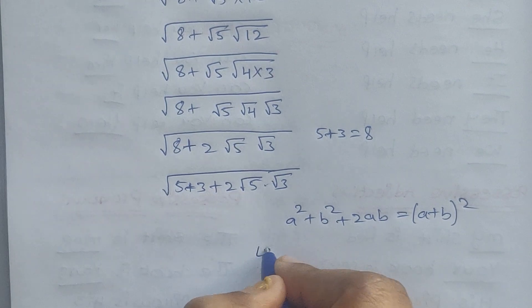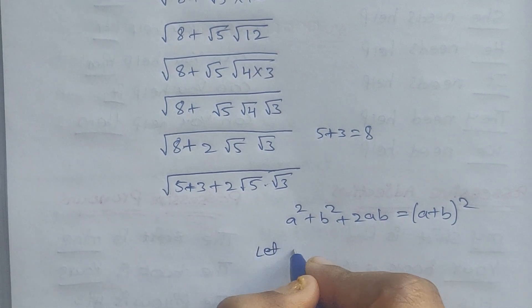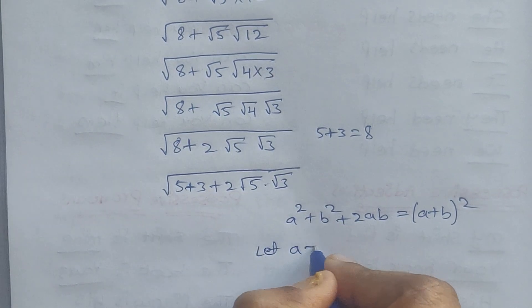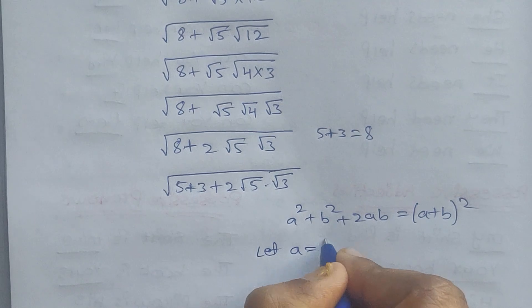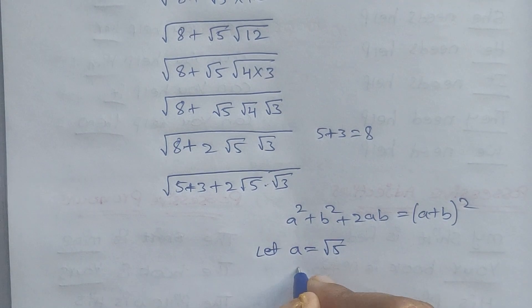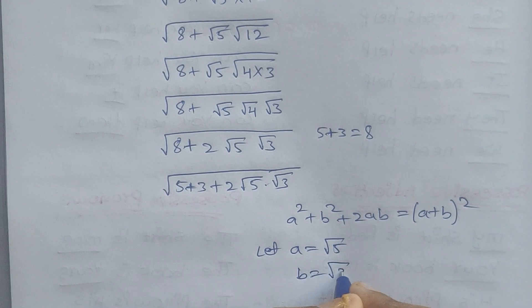So let a equal to square root of 5, b equal to square root of 3.